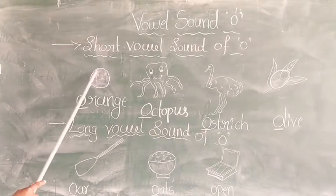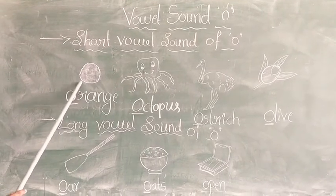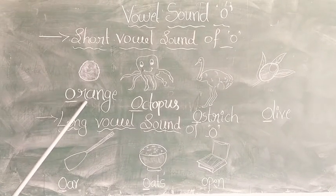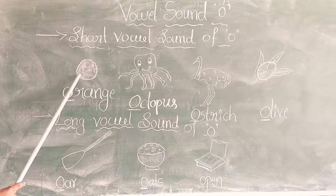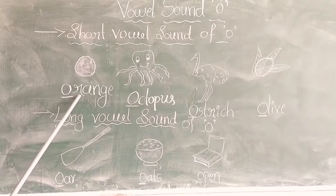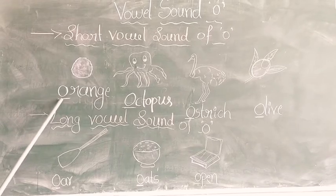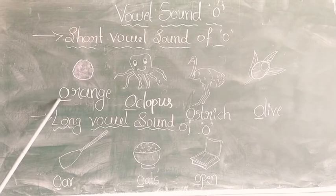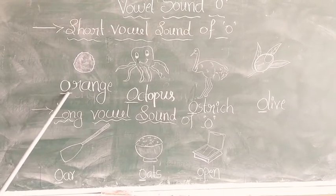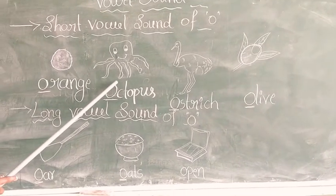Short mobile sound of O. What is the picture here? Orange. O-R-A-N-G-E, orange. This is the short mobile sound of O.